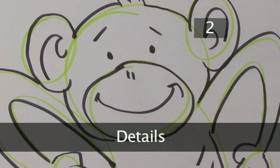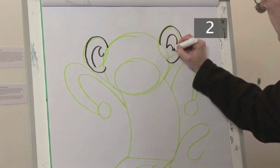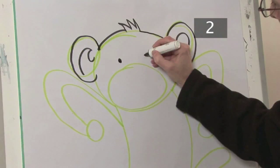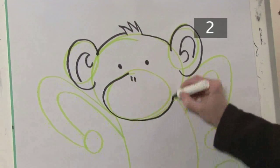Step 2: Details. Now add some details to the monkey's head. Go over his big ears and add a small tuft of hair. Draw in two eyes, two dots for the nose, and a line for his big smile.